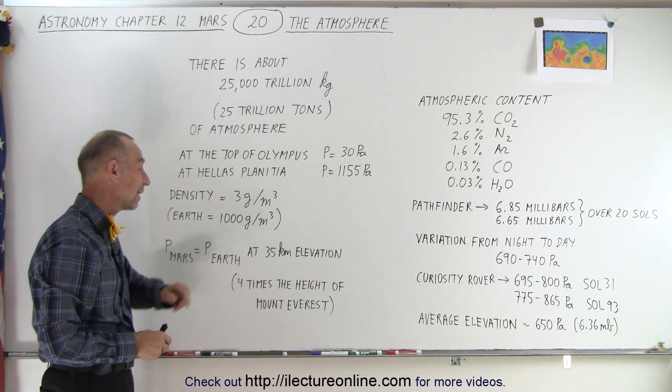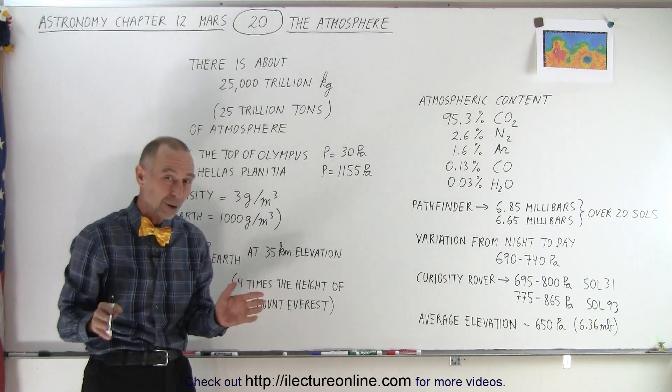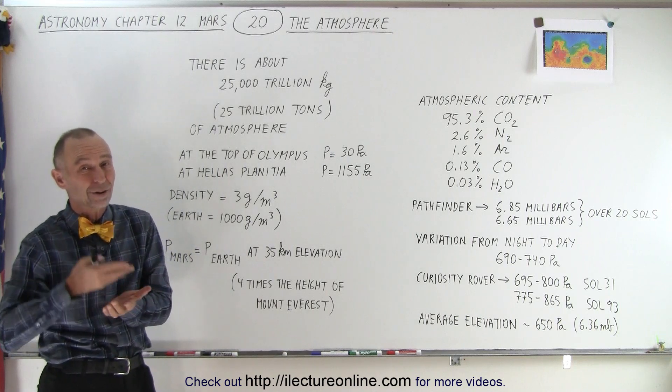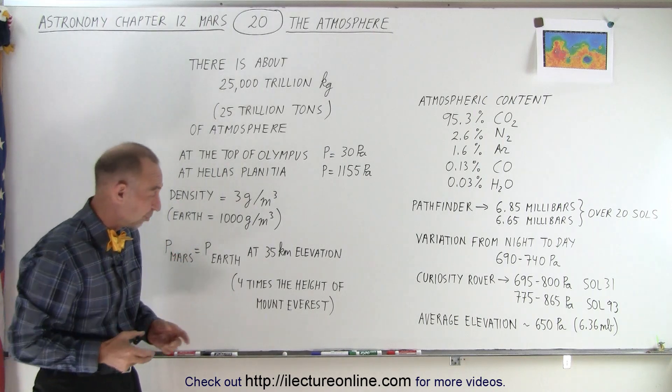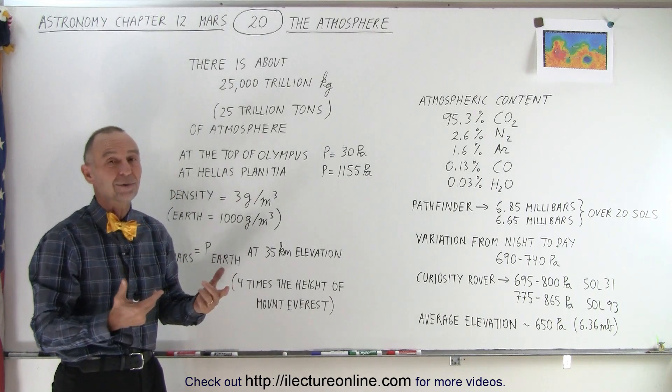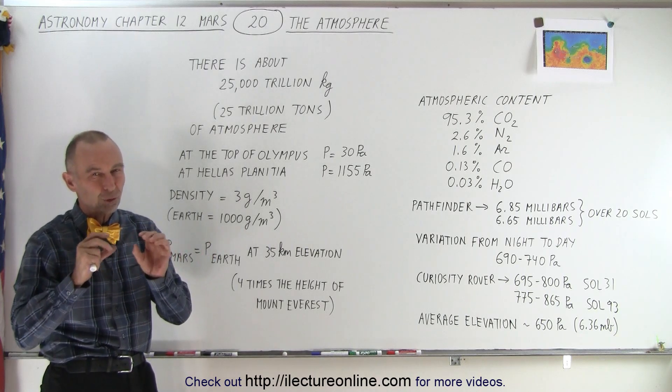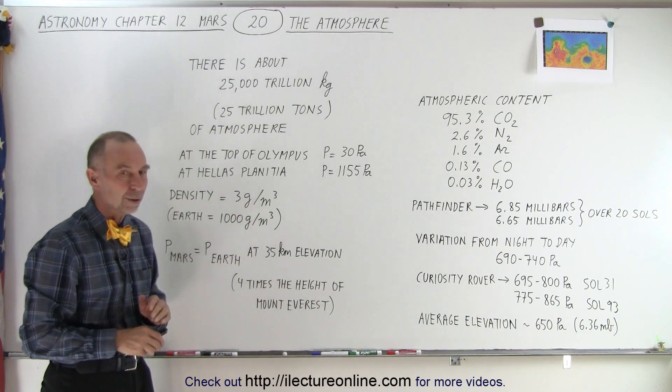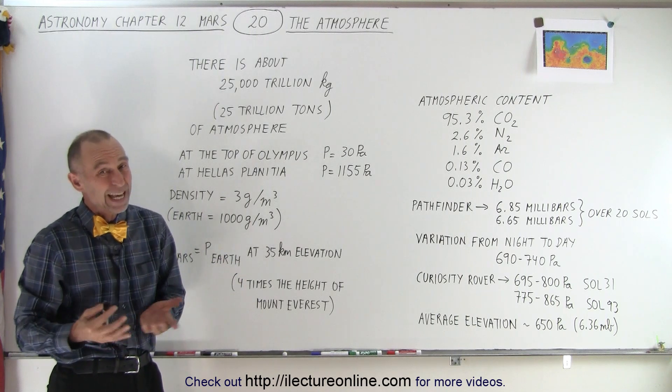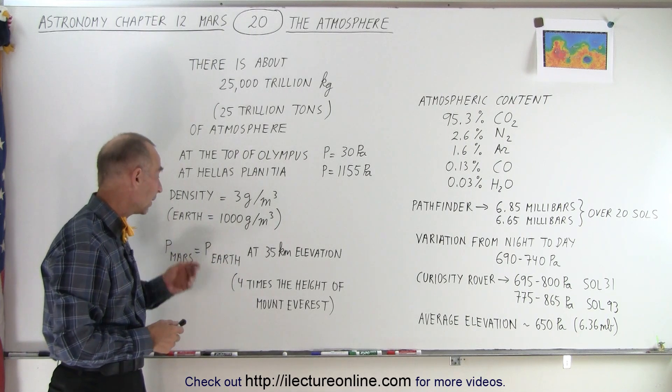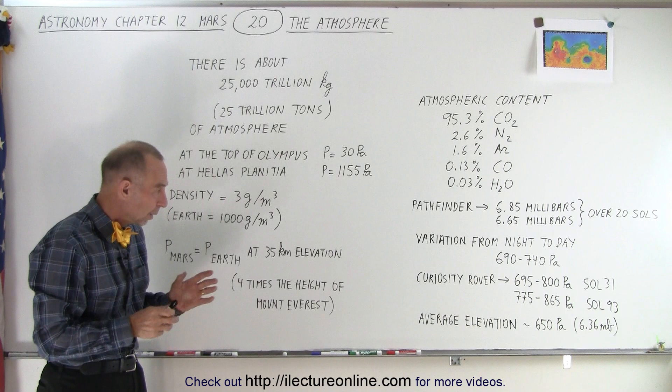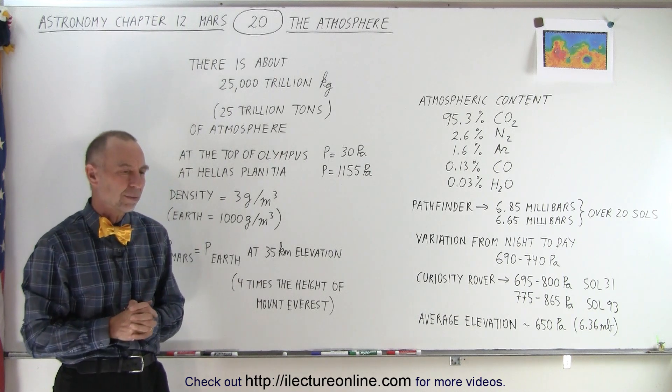35 kilometers up is about four times the height of Mount Everest. You already know how hard it is to breathe when you get to the top of Mount Everest because the air pressure is so low. Imagine going four times as high—the air pressure is so small there that it then compares to the air pressure on Mars. So that gives you a good idea as to how low the pressure is on Mars.